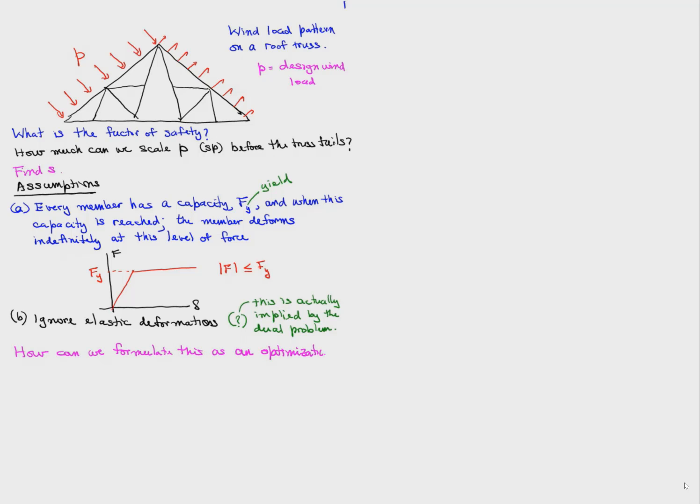So how can we formulate the limit analysis problem as an optimization problem? First, we want to maximize the scale factor S because we want to see what is the largest scale factor that can be applied while still maintaining equilibrium. So B transpose F equals S times P, that's equilibrium, and while all the members are at or below capacity. So the absolute value of F is less than or equal to Fy for each member.